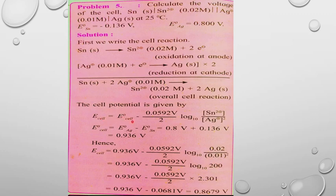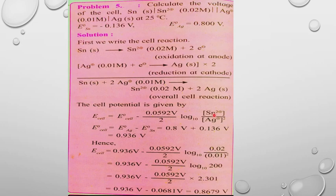The cell potential is calculated using the Nernst equation: E_cell = E°_cell − (0.0592 / n) × log([products] / [reactants]), where n = 2. The standard EMF of the cell: E°_cell = E°(Ag) − E°(Sn).